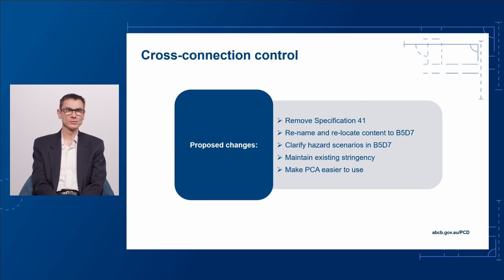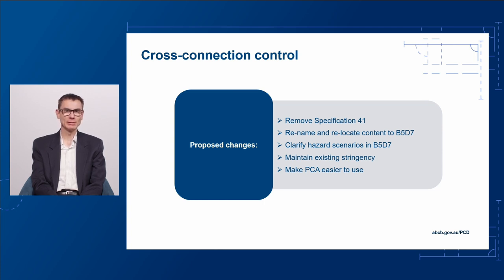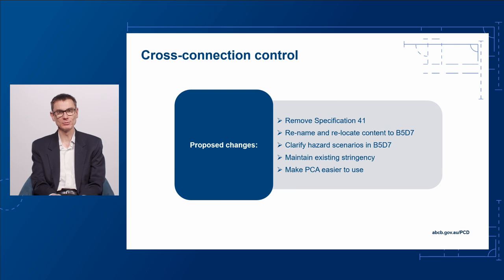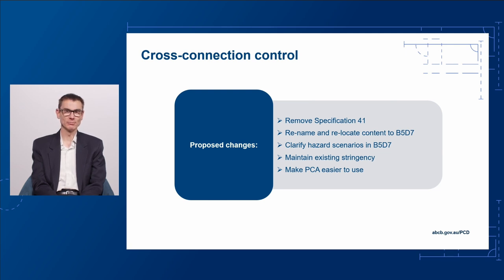Next, cross connection control — some changes to Part B5 in response to industry feedback. When you open the public comment draft, you'll notice that Specification 41, cross connection hazards, has a big red line through it. Don't be scared — it hasn't been removed entirely. It has been effectively relocated to a new provision B5D7. That process of relocation also includes some clarification about certain hazard scenarios. So you'll find a little bit of clarification in the new B5D7 as compared to the old Specification 41.